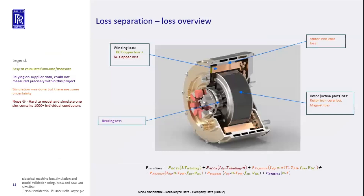A quick overview of the losses in an electric machine. The stator iron core loss, magnet loss, and rotor iron core loss are things we can capture in simulation with some lack of confidence. For example, it is really hard to take into account mechanical stress in the iron loss calculation due to lack of material data. Also, AC copper losses couldn't be fully covered because this machine design has more than 1000 conductors in a slot, which is hard to model and is a 3D problem requiring high computing resources. Bearing loss is also a loss contributor, but we had limited data from the bearing supplier from only one optimum temperature range.